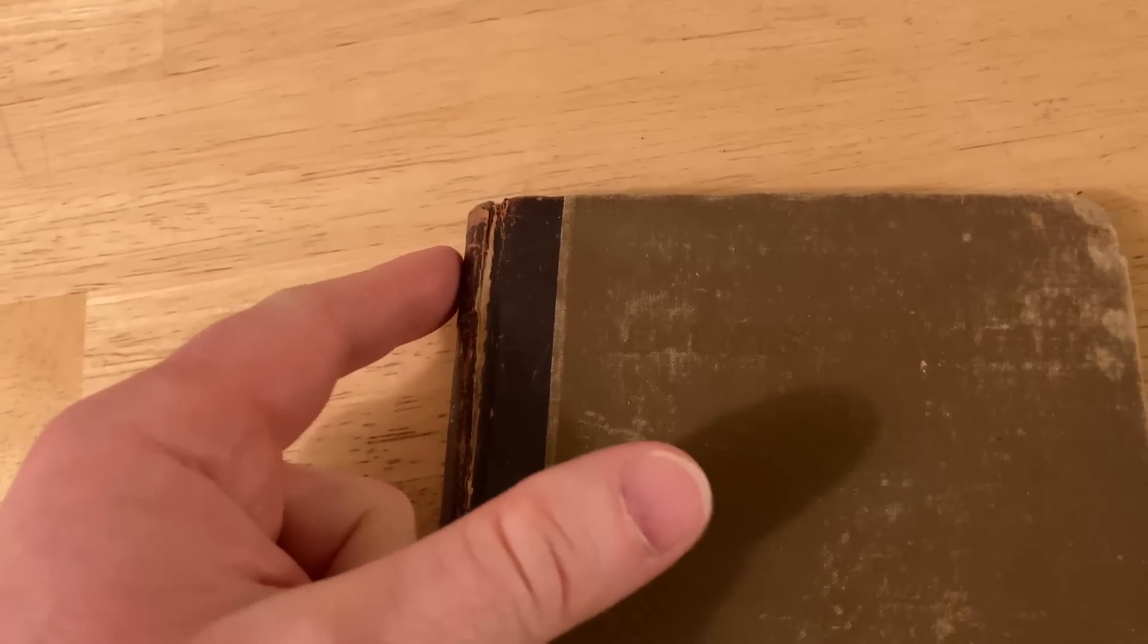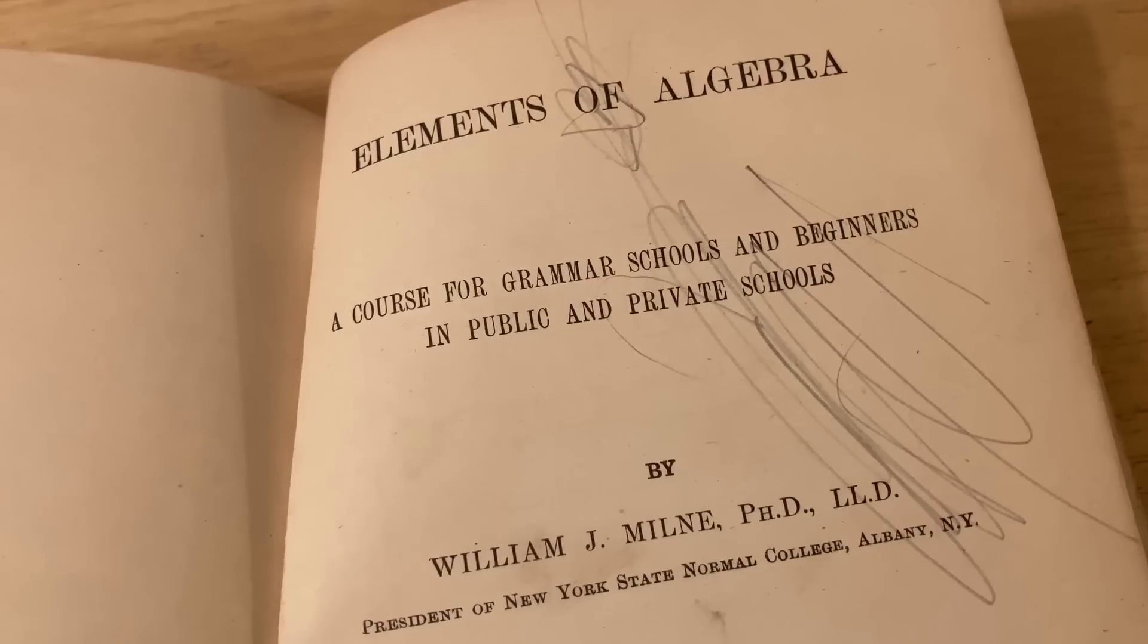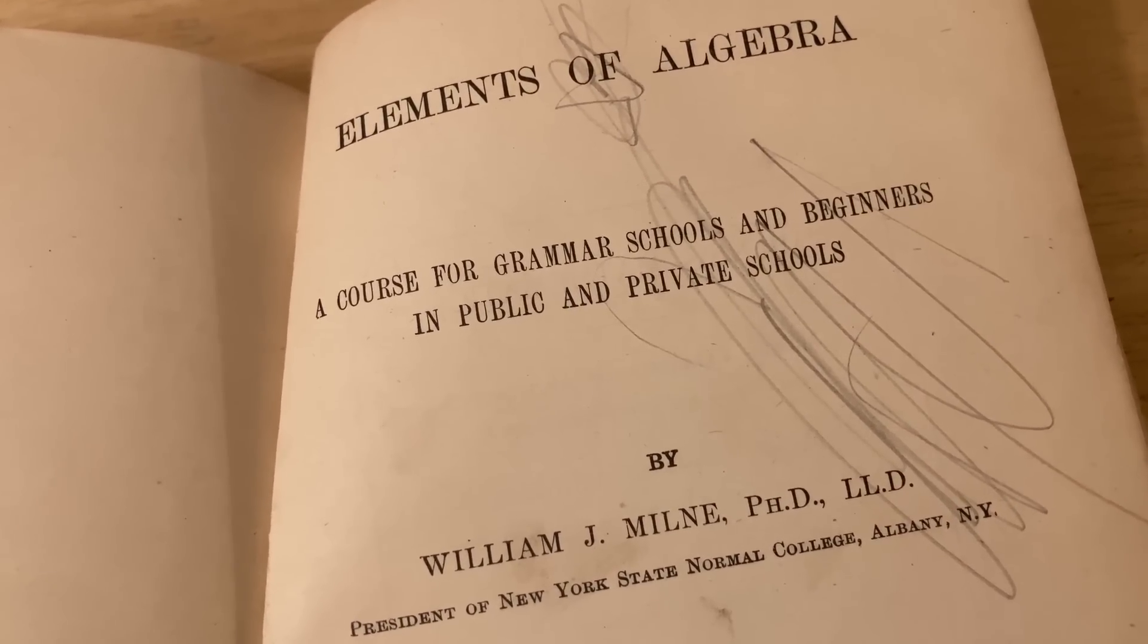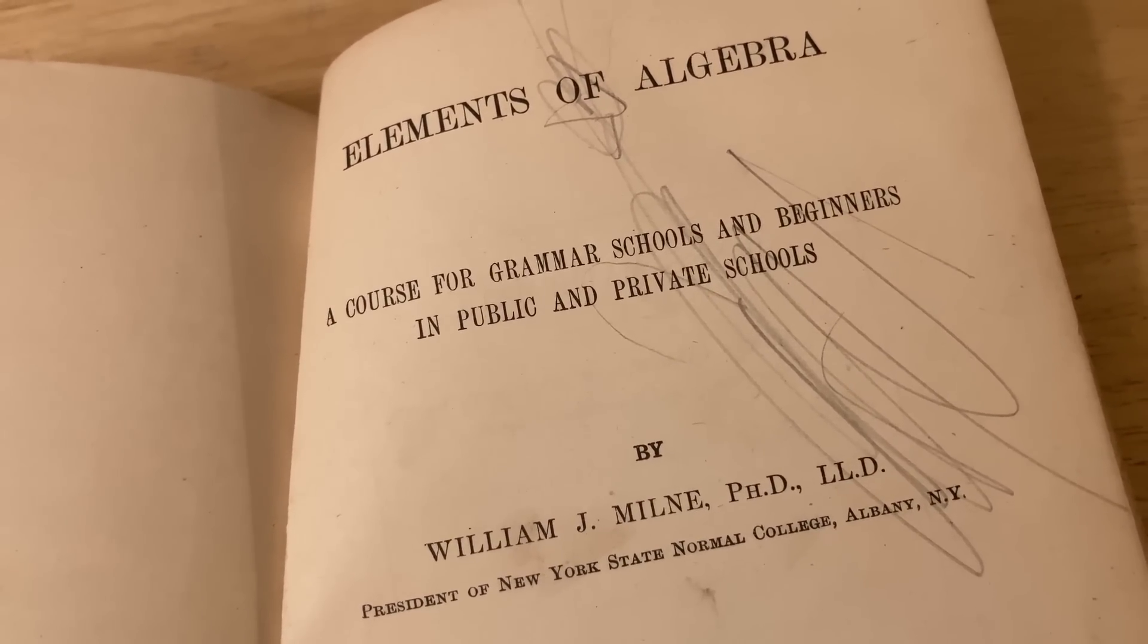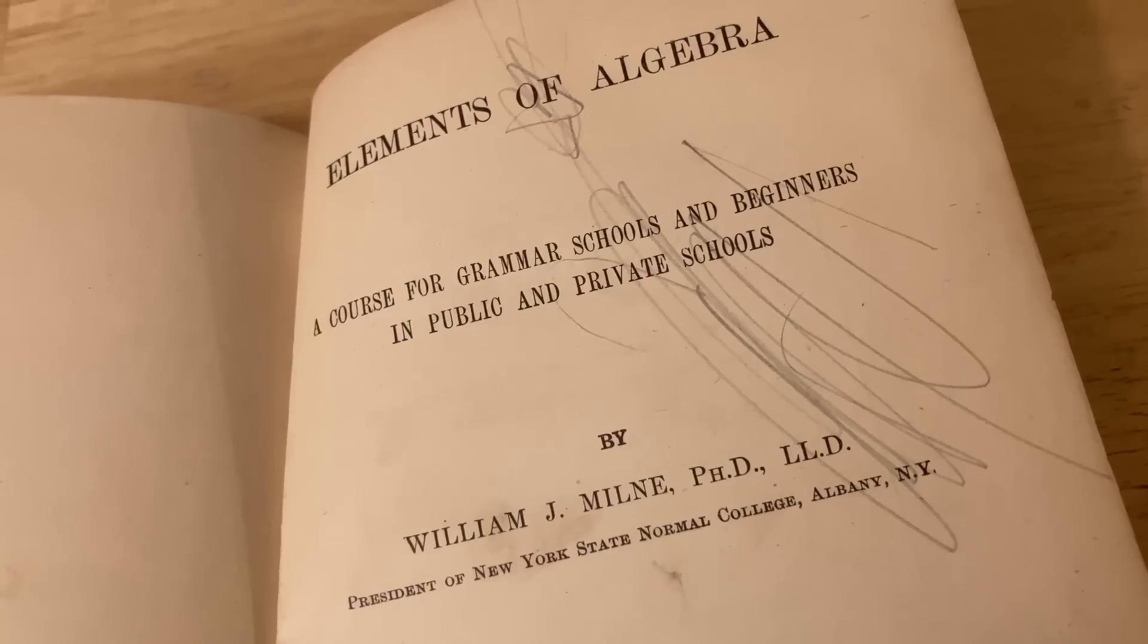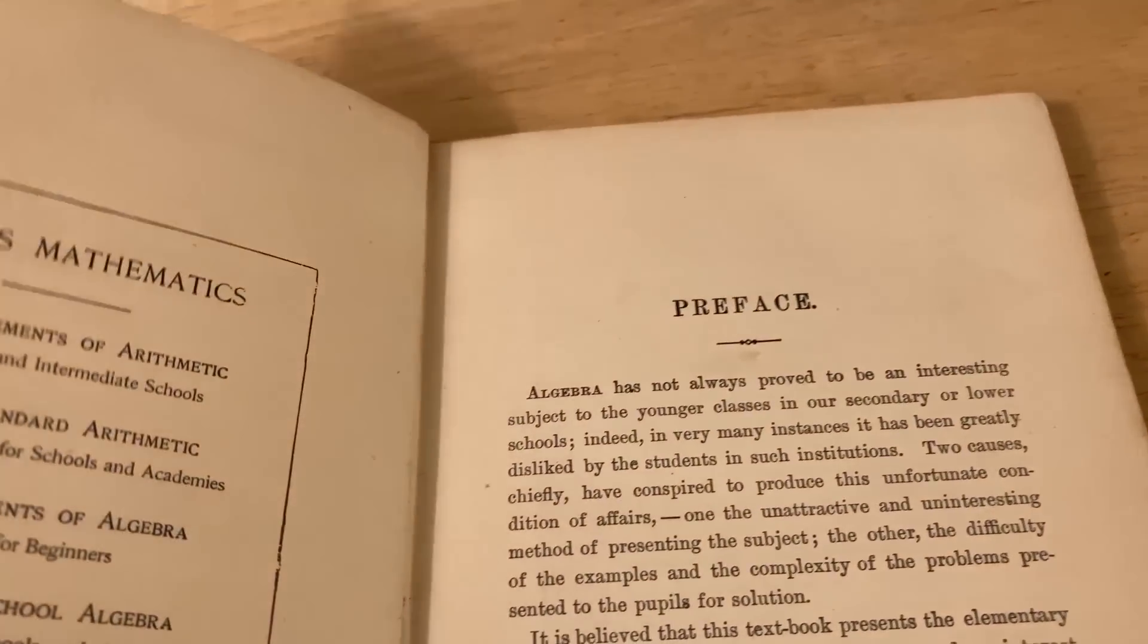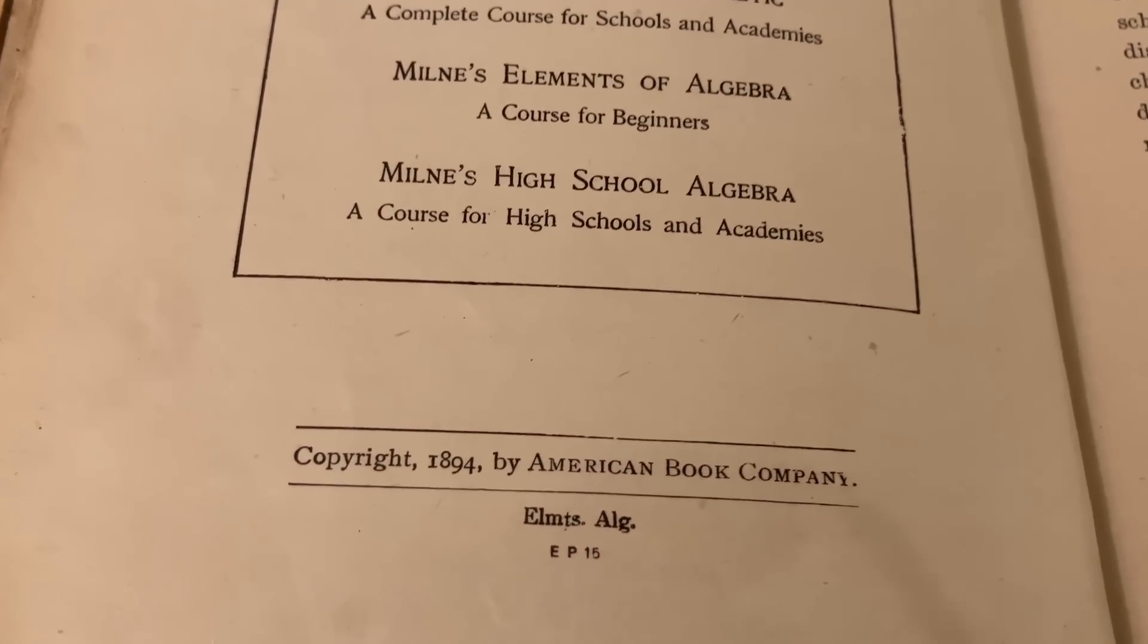When I bought it, it wasn't like this. It's because I've been working through some of the exercises that it looks so old. Here's the inside of the book. Elements of Algebra, a course for grammar schools and beginners in public and private schools. So this is a book that was used by kids. Kids in school would use this to learn algebra. And it is from 1894. Talk about an old book.